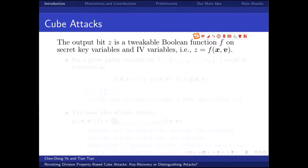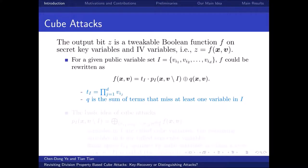Cube attacks were first proposed by Dinur and Shamir at NeuroCrypto 2009. For stream ciphers, the output bit z is a tweakable boolean function f on secret key variables and IV variables. For a given public variable set I, f could be rewritten in a specific form, where t_I is the product of variables in I, and q is the summation of terms that miss at least one variable in I.